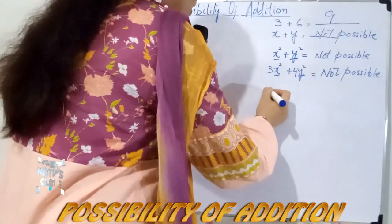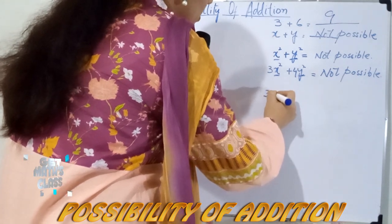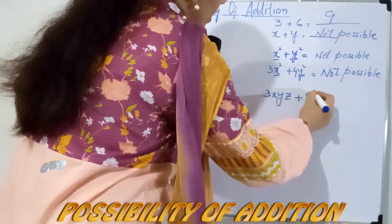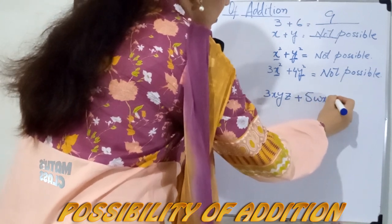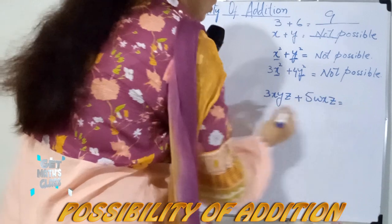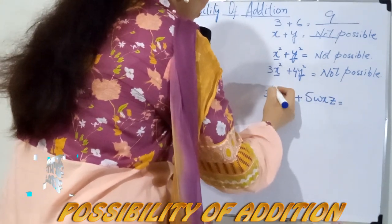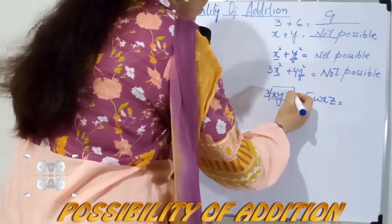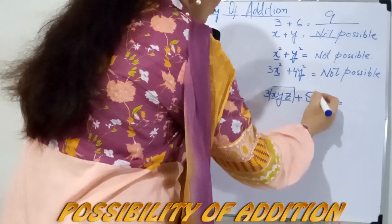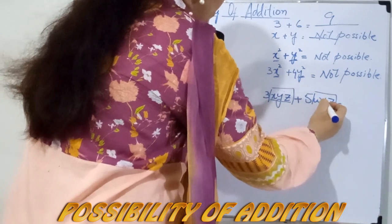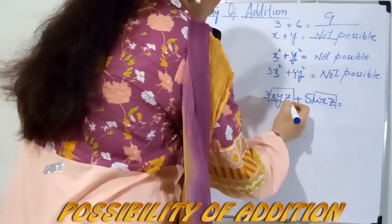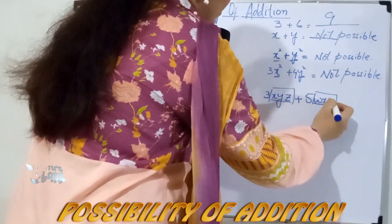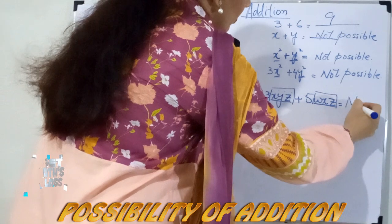Now here, the variable part again consists of more than one variable. For example, 5wxz. Match the variable parts: one term has x, y, and z, while the other has w, x, and z. Because the variable part is completely different — w, x, z versus x, y, z — addition is not possible here.